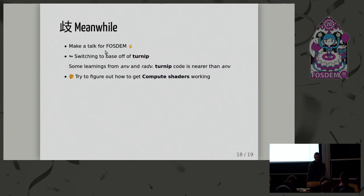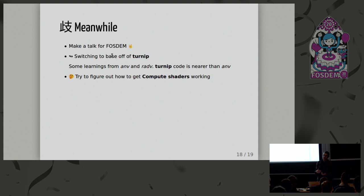I also had to prepare this talk. I initially began with ANV as a template but switched to Turnip instead, because ANV already has a lot of optimizations that are hard to translate to my hardware. I now use Turnip as my base. Currently I'm trying to figure out how compute shaders work, whether the infrastructure is already there or not — and that will keep me busy for some time.